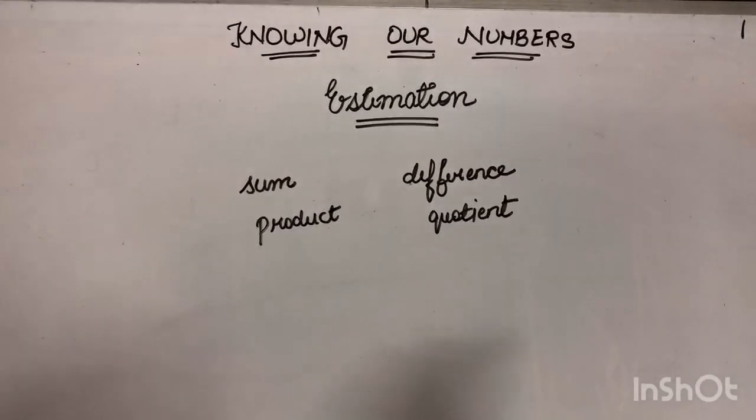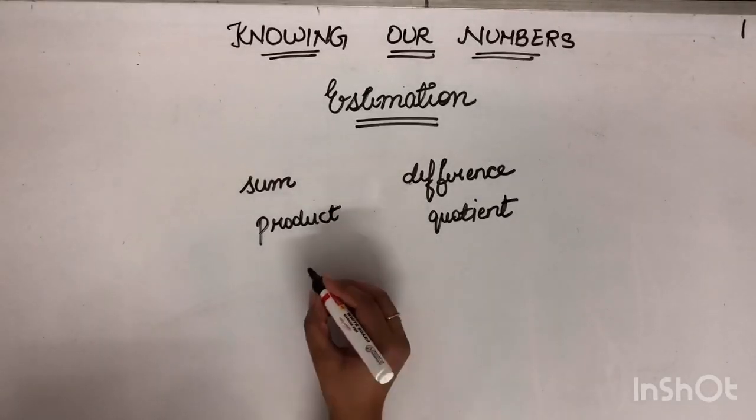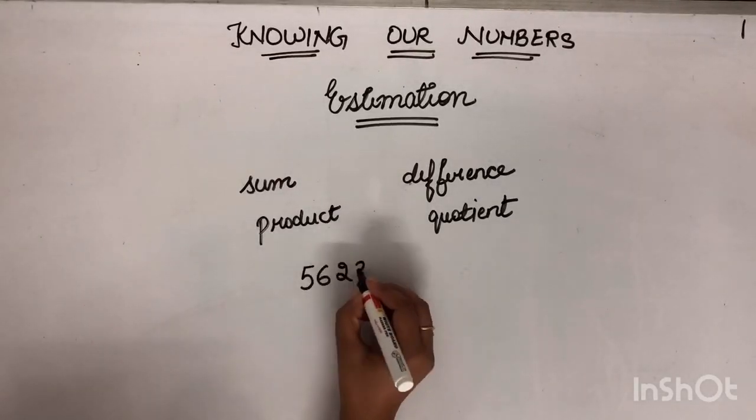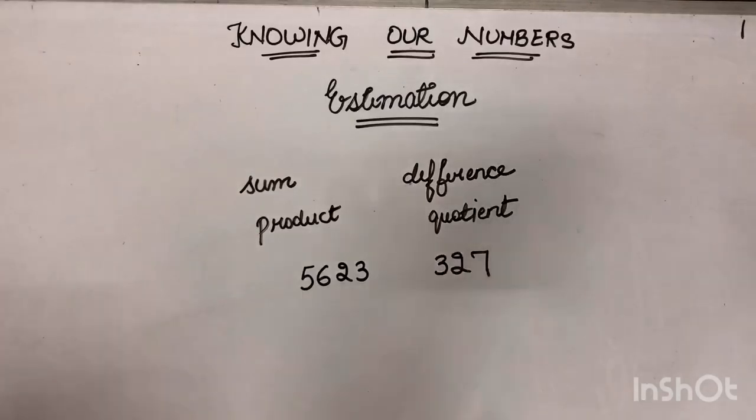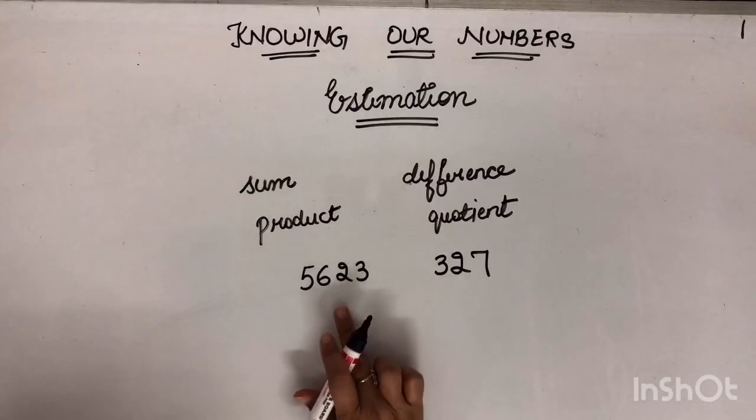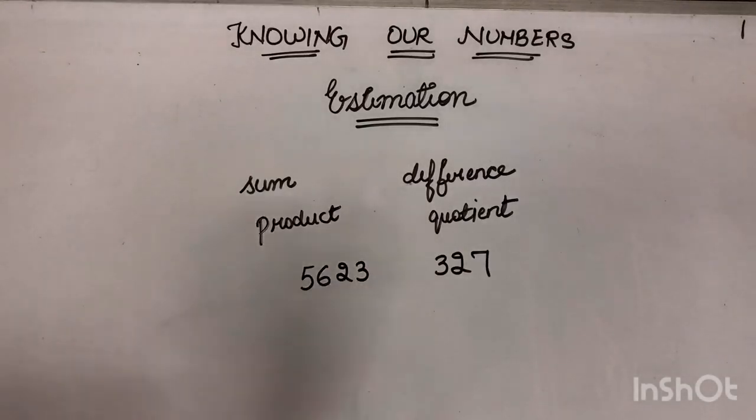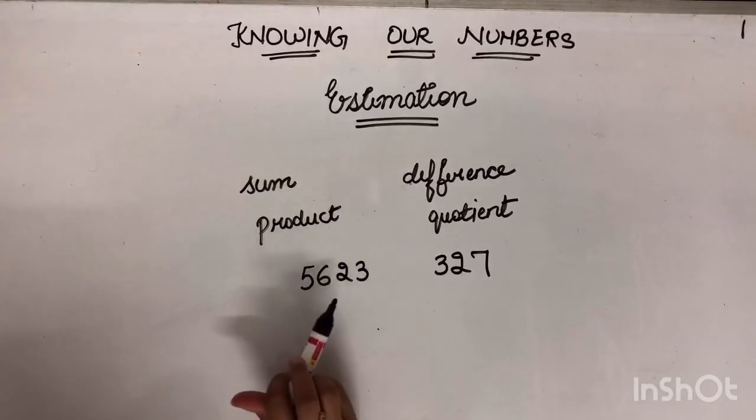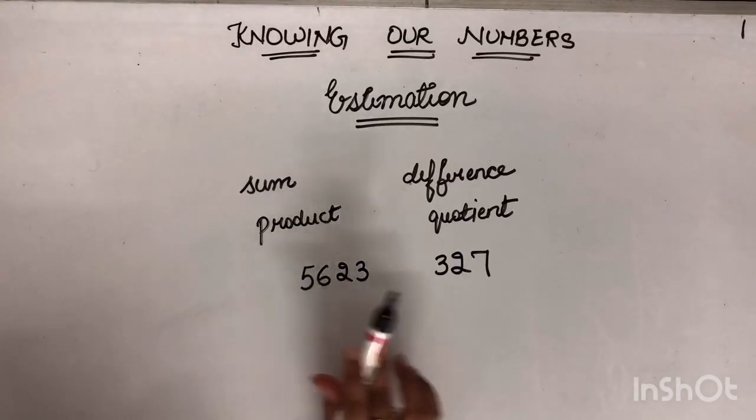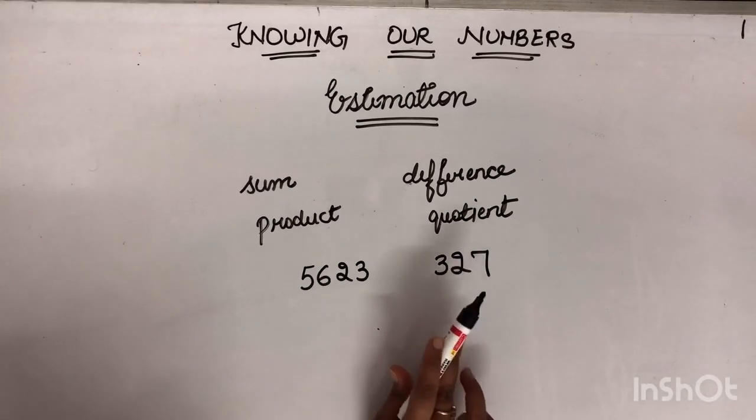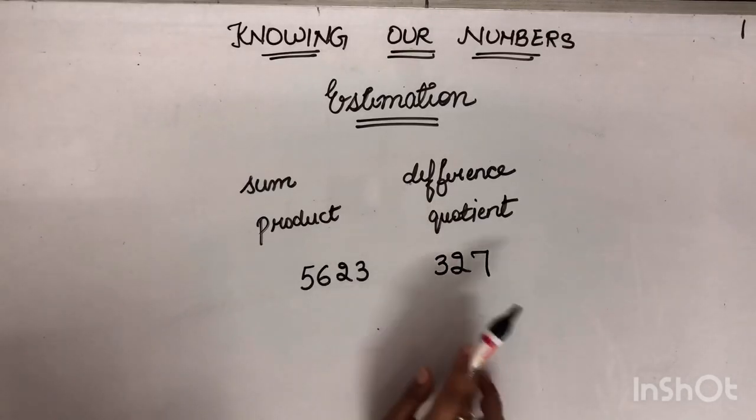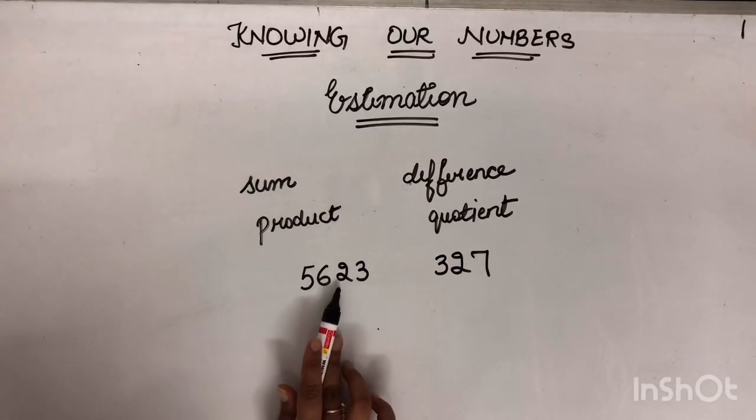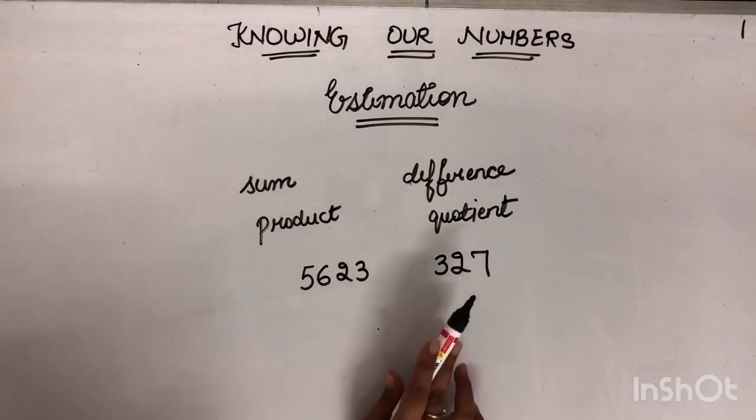So first thing you have to keep in mind while estimating these 4 operations is that let's say you are given 2 numbers. You have to add the estimated value of these 2 numbers. Now first you will round off these numbers to, you can round off at any place. But you have to keep in mind is, if you are rounding off this number to nearest hundreds, then you have to round off this number to nearest hundred. You can't change the places. Agar ye to nearest 10 hai, to isko bhi kis pe estimate karna hai? To nearest 10.